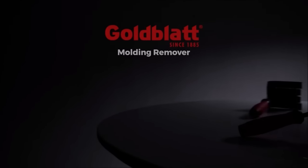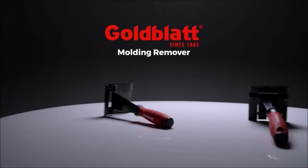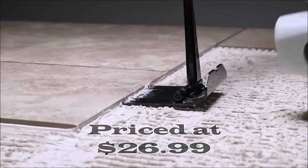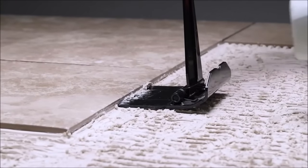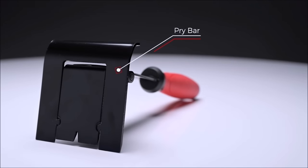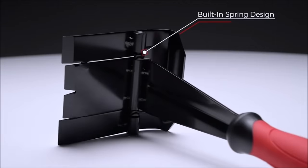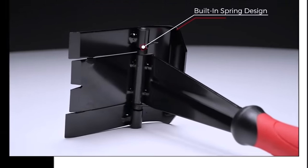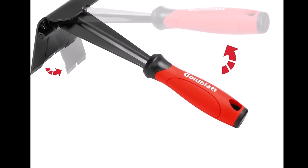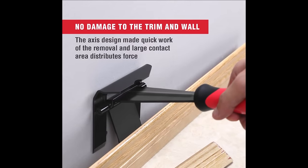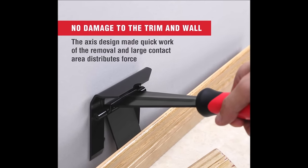Number three, the Goldblatt trim puller is an essential multi-tool designed for a wide range of commercial and remodeling applications, priced at $26.99. Its unique design features a larger, flatter, and wider contact area compared to traditional tools, along with an integrated wedge center that enhances removal efficiency while preventing damage to both the trim and the wall. Constructed from carbon steel and 65mm steel with a black electrophoretic and polished finish, this trim puller offers exceptional durability and strength.